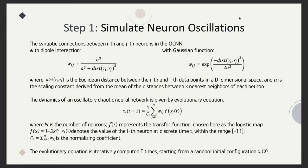This slide shows the math behind our study. We have formulas for two types of connections in our neural network: DeepL and Gaussian. We also have the evolutionary equation that guides how our network changes over time.